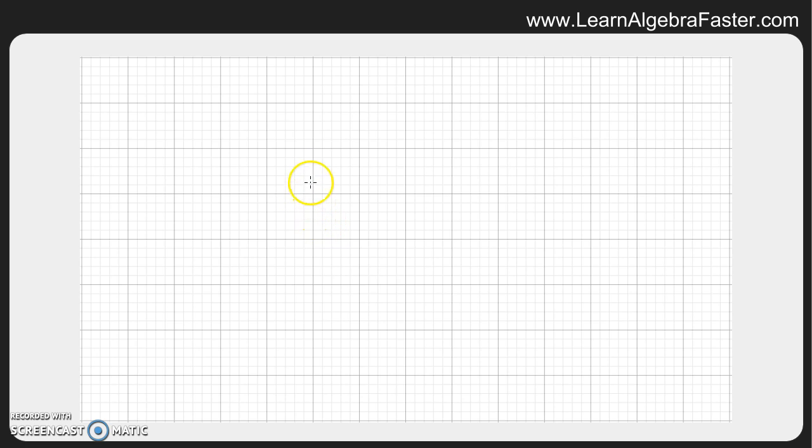I told you that the coolest thing about bar graphs is that they're easy to make, so we'll make one right now. Let's draw our blank axis here. This is the vertical axis because it's going up and down, and we're going to put some sort of number here. This is the horizontal axis, and this is where we are going to put some sort of category.